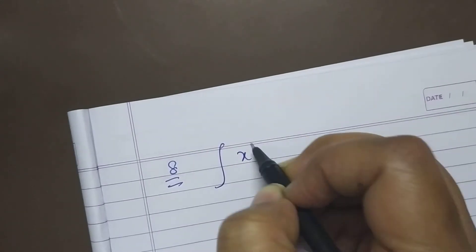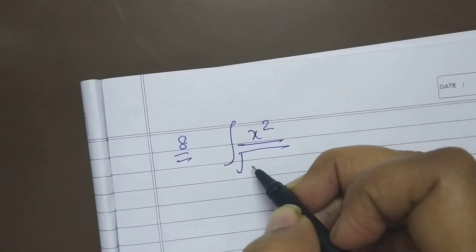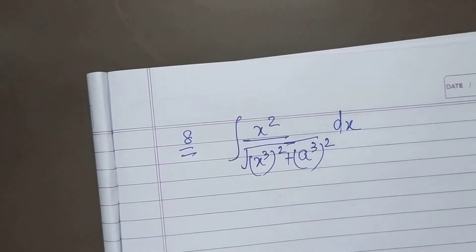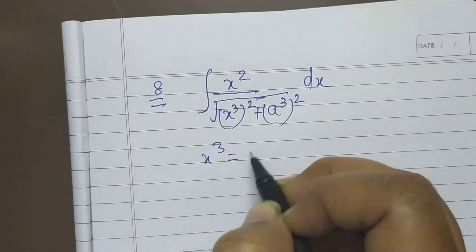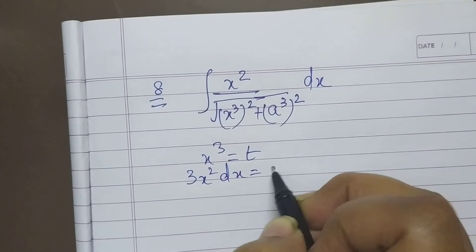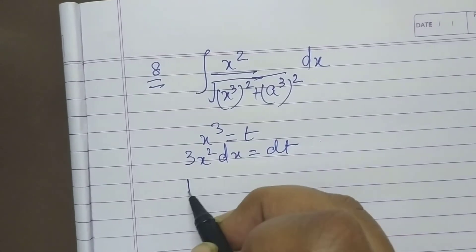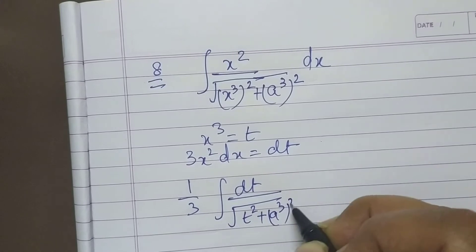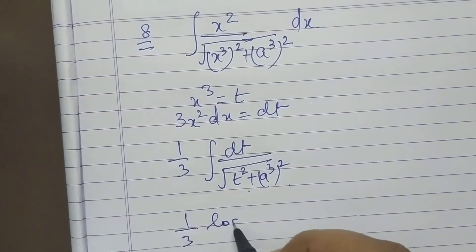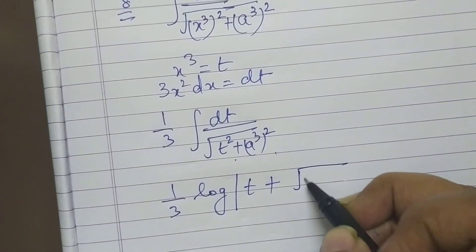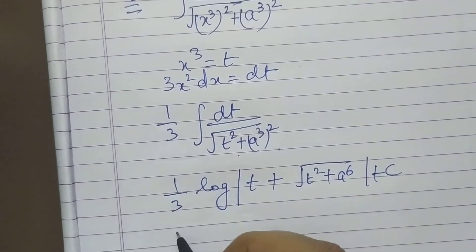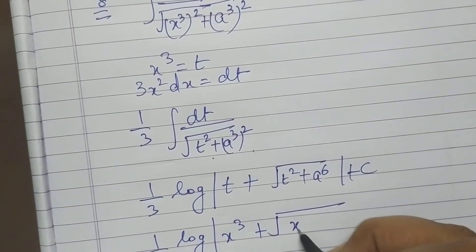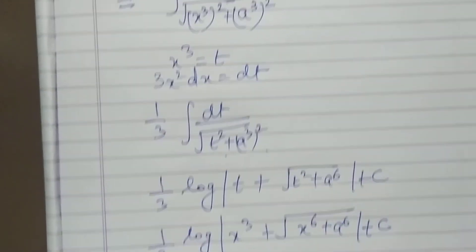Question 8: x²/(x⁶ + a⁶) dx. Write x⁶ as (x³)² and a⁶ as (a³)². Substitute x³ = t, so 3x² dx = dt. This gives (1/3)·dt/(t² + a⁶). Applying the log formula: (1/3)·log|t + √(t²+a⁶)| + c = (1/3)·log|x³ + √(x⁶+a⁶)| + c.